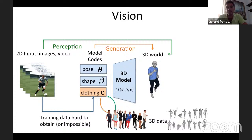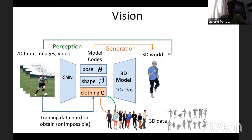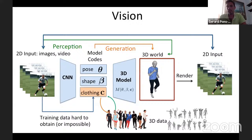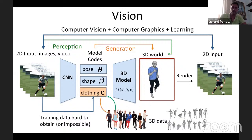The problem is that paired image-to-3D data is hard or almost impossible to obtain. If we had it, we could just train a CNN to map from pixels to the 3D world representation. But what is possible is to consider the images themselves: you predict model codes from pixels, create a 3D world representation, render it back into images, and use a self-supervised loss to learn both the perception module and the generation model. This paradigm integrates components of computer vision, computer graphics, and learning.